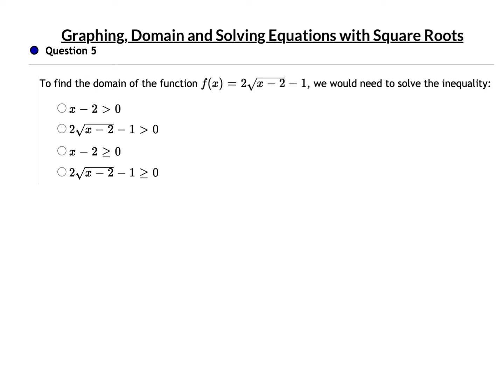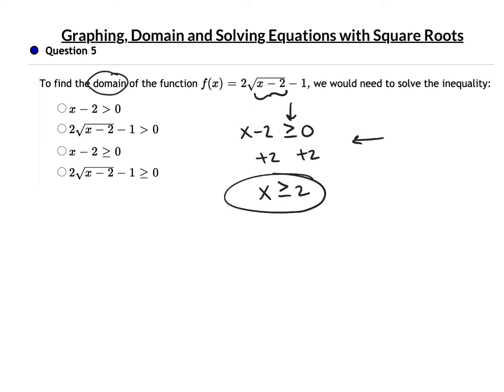Question 5: we're going to find the domain of this function. We know a square root can't be negative, which means x minus 2 has got to be greater than or equal to 0. Solve that — add 2 to both sides just like an equation: x is greater than or equal to 2. Reminder: you only flip the inequality sign if you divide or multiply both sides by a negative number. So this is our answer.